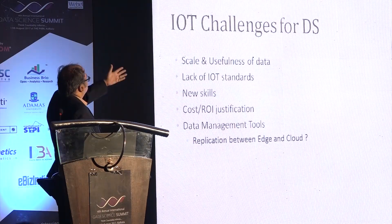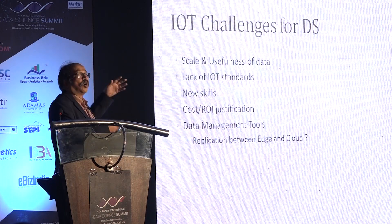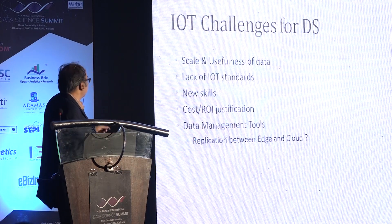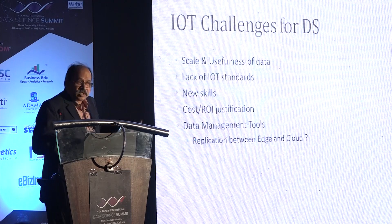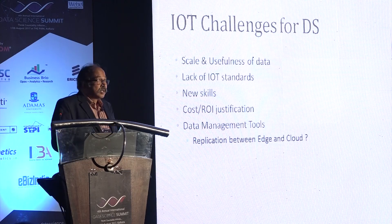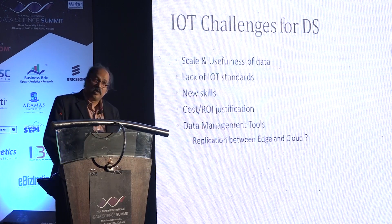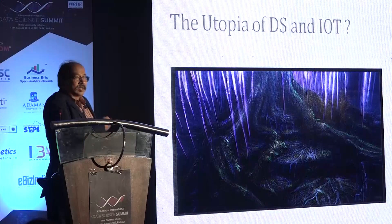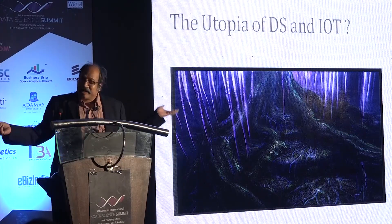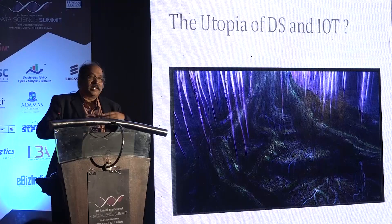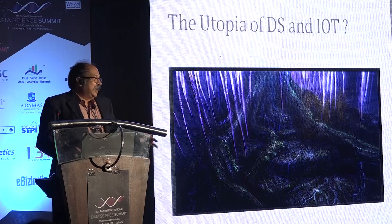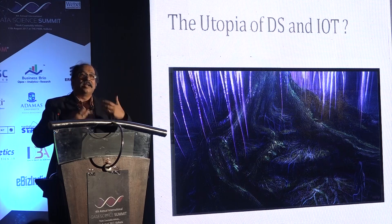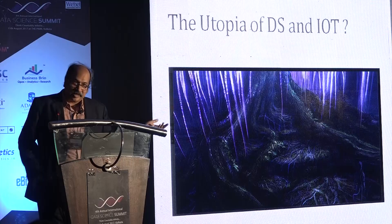As far as data science is concerned, the challenges are: the scale of data is large — it's almost a big data problem; there aren't too many IoT standards; data scientists may have to learn new skills; you have to justify the cost of installing sensors; and data management tools are limited. The utopia of DS and IoT working together is like Avatar — a very connected world where everything talks to everything, resources are utilized most effectively, and we have very intelligent smart cities, homes, and factories. Thank you.